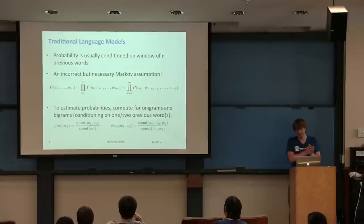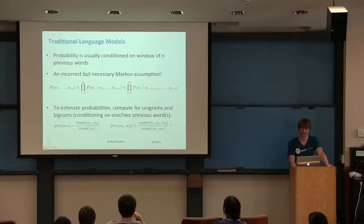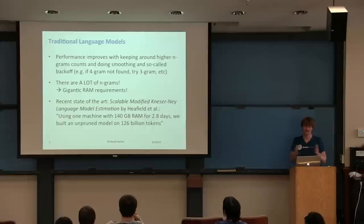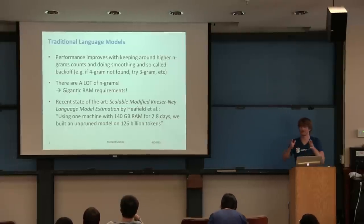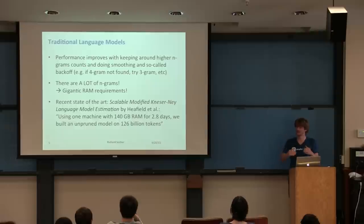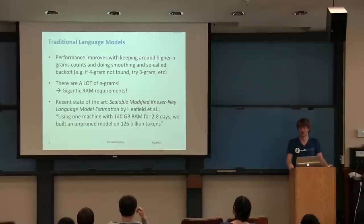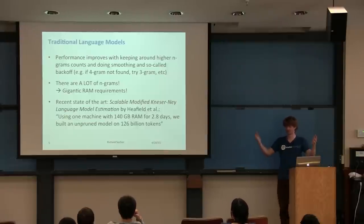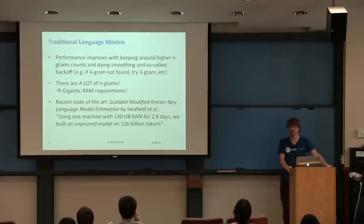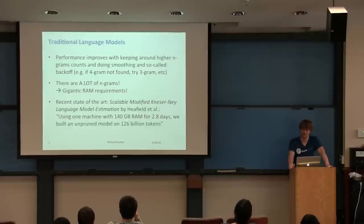For example, to get the probability for 'walks' given 'the cat', you take all the counts in a large corpus of how often you see 'the cat walks' and divide by the counts of 'the cat'. Performance improves when you keep higher n-gram counts. You also do smoothing and back-off: if you don't find a 4-gram at test time, you look for the trigram, then bigram, and so on. The problem is there are a lot of n-grams as n gets larger — the upper bound is vocabulary size to the power of n.